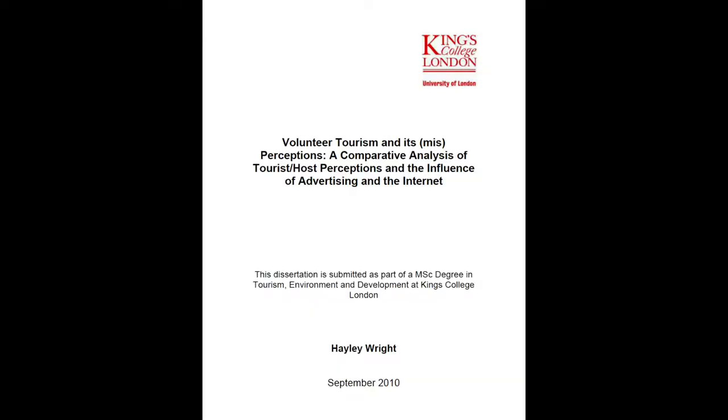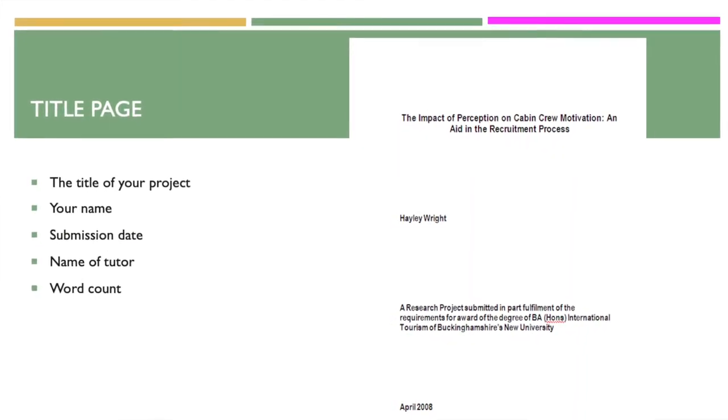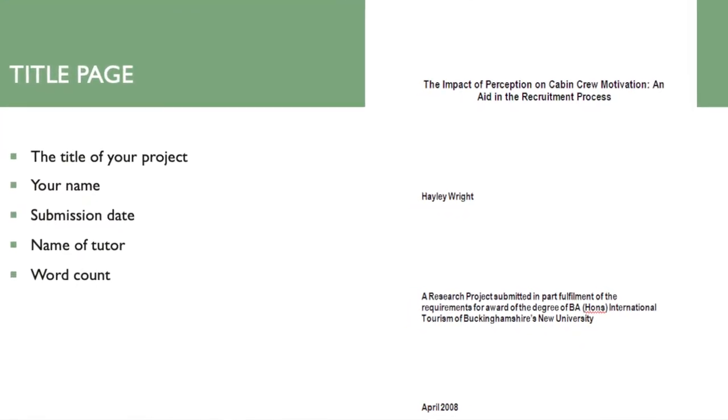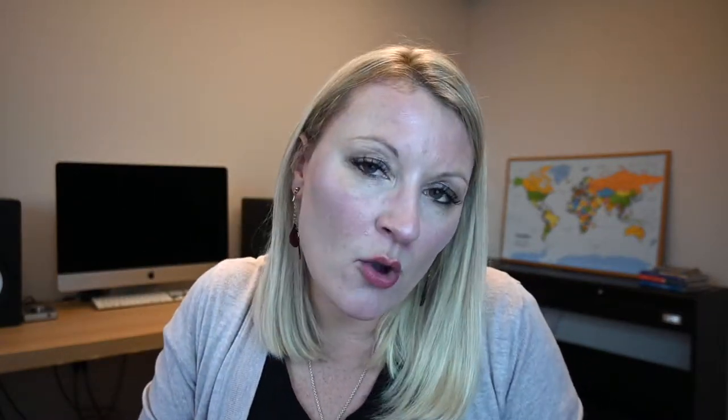The first thing that everybody is going to see when they read your research project is the title page. You want this to look professional, so you probably don't want it covered with pictures and patterns. There might be a set format required by your tutors or lecturers, so do check that. But if there's not, it's generally a good idea to include the title of your project, your name, the submission date, name of your tutor or supervisor, and the word count. Some people also choose to include a small image or a logo of your college or university.